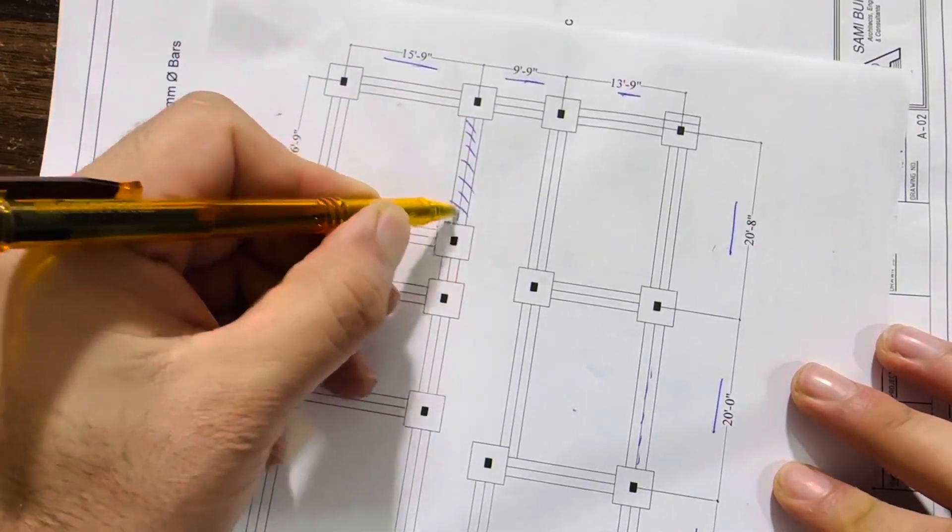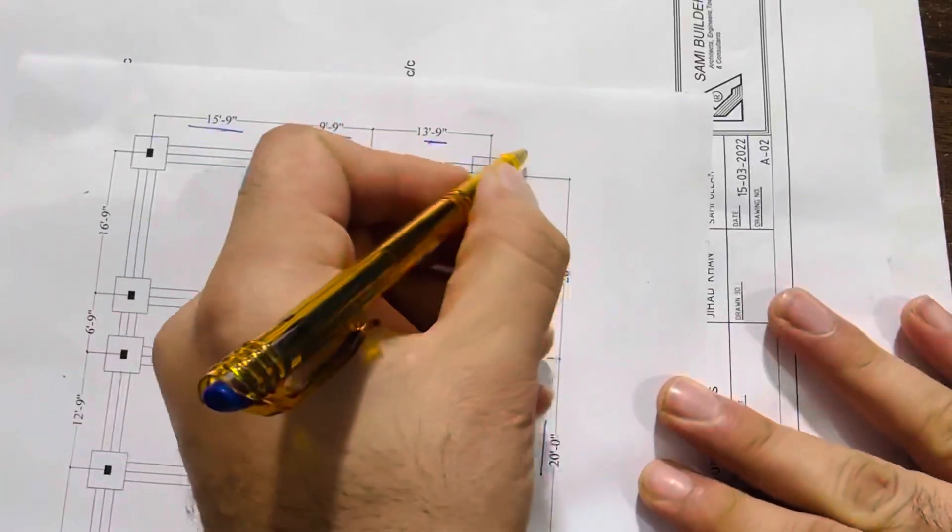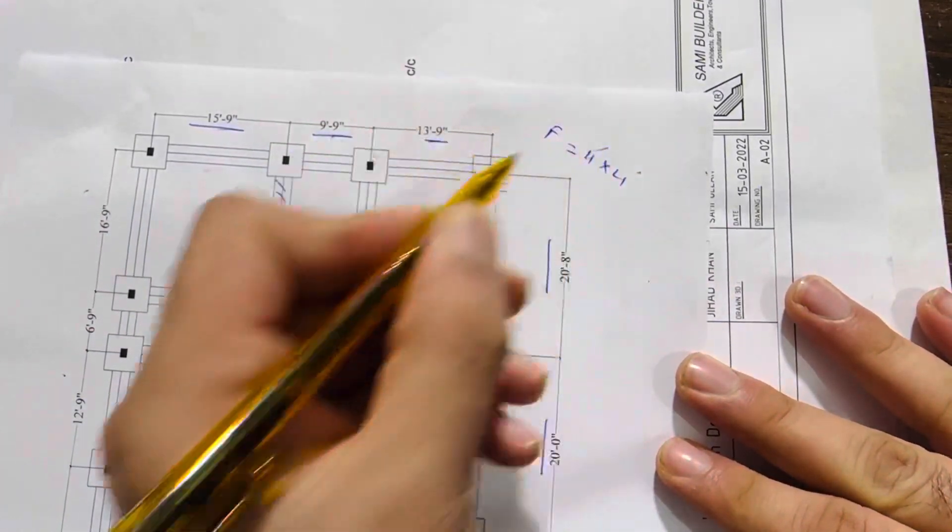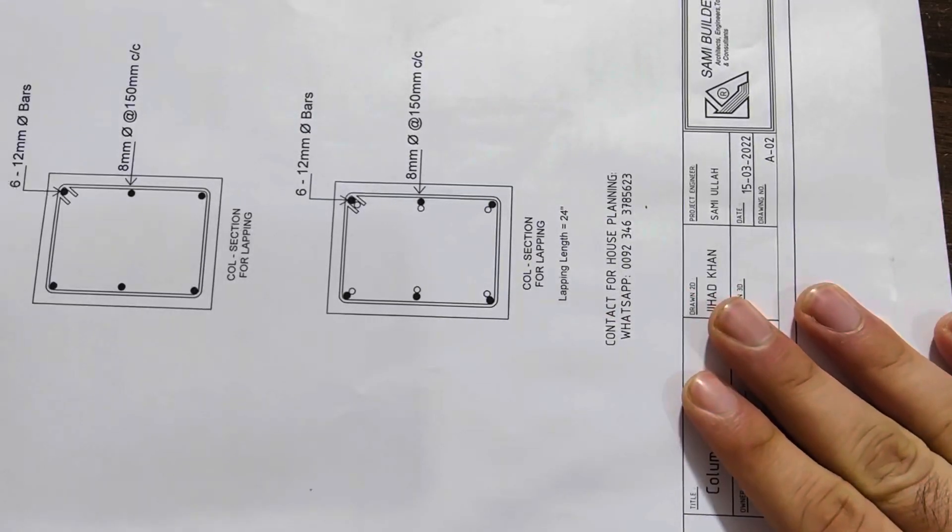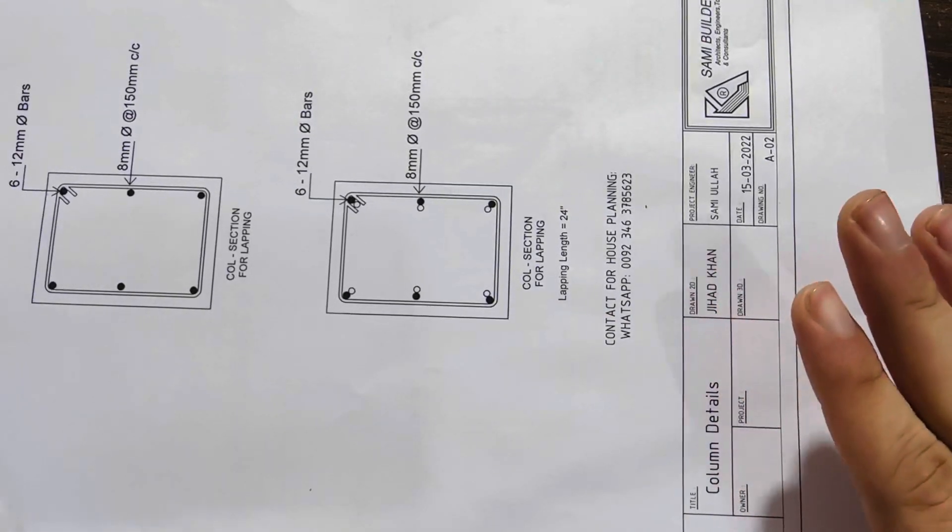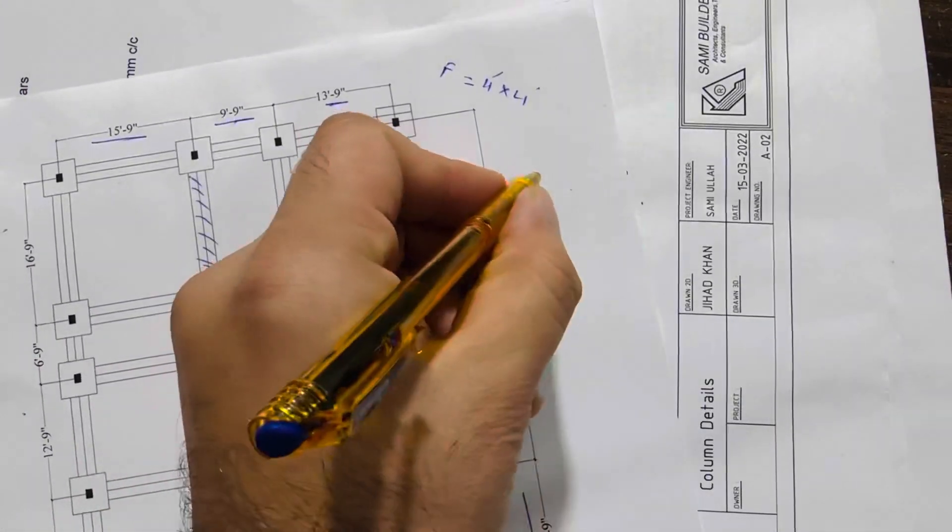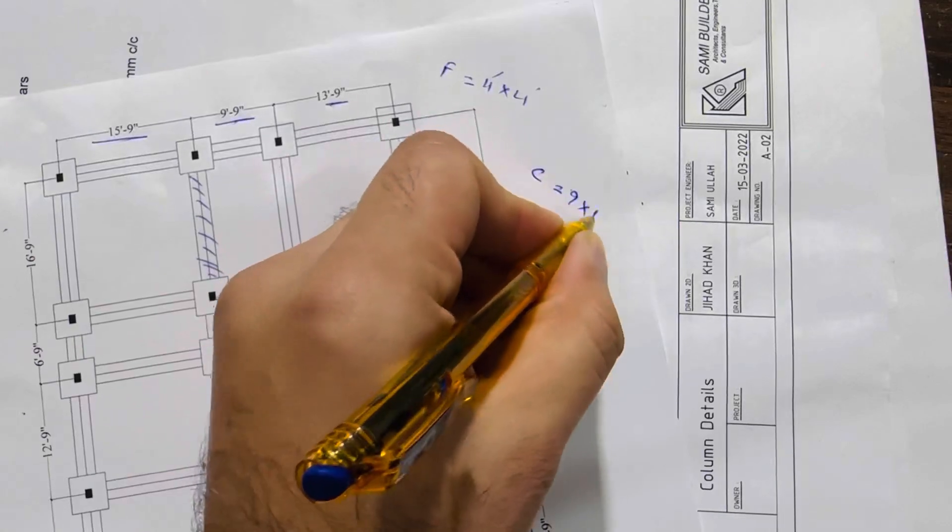First of all, I will tell you the footing size. Footing is here 4 feet by 4 feet. You can see inside this column, the size is 12 by 9 inches.